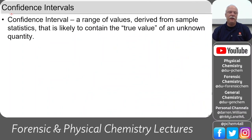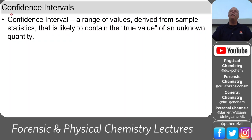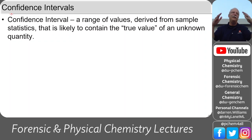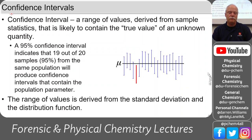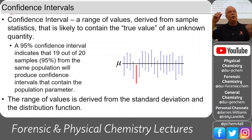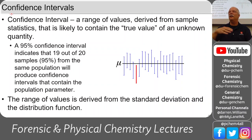A confidence interval is a range of values likely to contain the true value. We do our measurements but don't know the true value, so we express confidence given our measurements: we give our measurement, multiply our uncertainty by 1.96, and say the true value is in that region with 95% confidence. This means that out of 20 experiments, 1 might be outside that range. This applies when you have a normal (Gaussian) distribution.